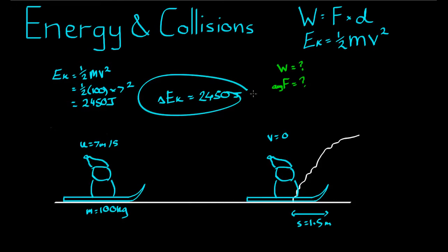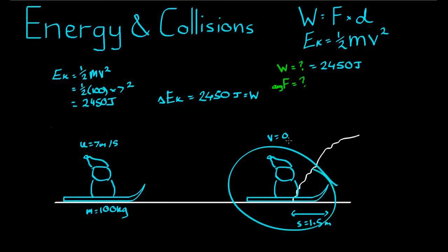All of this change in kinetic energy must have been the result of the work done by the snowbank on the sled. So the work is equal to 2450 joules. And if 2450 joules worth of work is done in the opposite direction to the motion of a sledder who had 2450 joules worth of kinetic energy, of course it will take him down to zero kinetic energy, giving us that final velocity of zero.